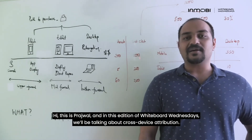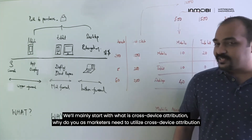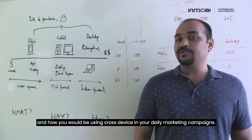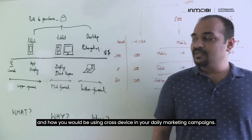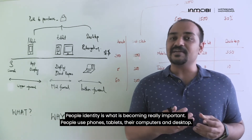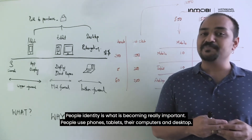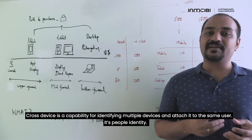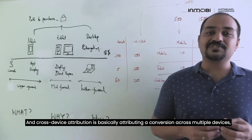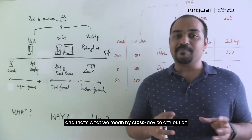Hi, this is Prajwal and in this edition of Whiteboard Wednesdays, we'll be talking about cross-device attribution. We'll start with what cross-device attribution is, why you as marketers need to utilize it, and how you would use it in your daily marketing campaigns. In this time and age, every user has multiple devices — people use phones, tablets, computers, and desktops. Cross-device is a capability for identifying multiple devices and attaching them to the same user — it's people identity. Cross-device attribution is basically attributing a conversion across multiple devices.